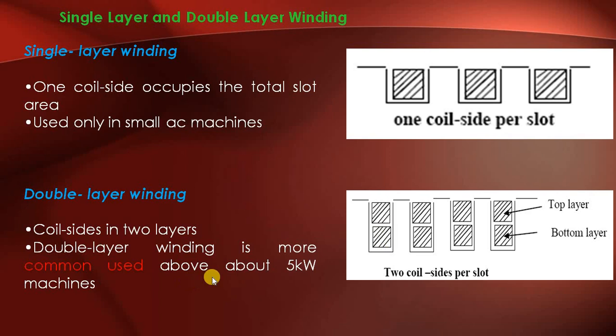Double layer winding is commonly used for machines above 5 kW.